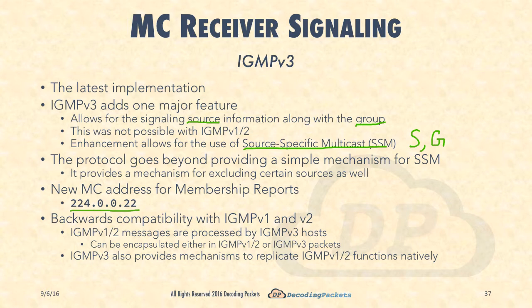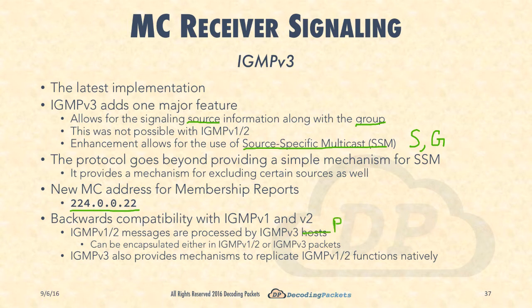IGMP version 3 is completely backwards compatible with version 1 and version 2, done in a variety of different ways. First, IGMP version 2 and version 1 messages - if there is a native host on that segment that only understands version 1 and version 2 - those messages can still be processed by IGMP version 3 routers, which are the LHRs. If you receive an IGMP version 2 or version 1 message, the router simply processes it and makes use of that information.